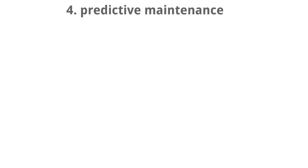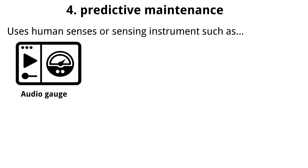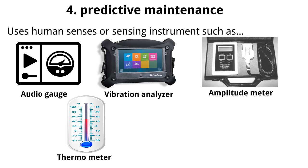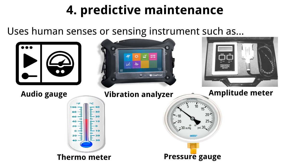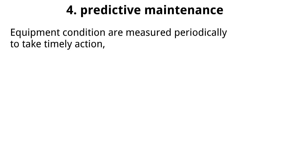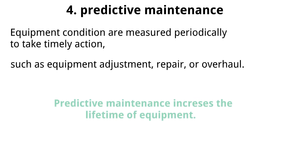4. Predictive maintenance. It is a newer maintenance technique that uses human senses or sensing instruments such as audio gauges to sense machine sound, vibration analyzers for checking vibration, amplitude meters, thermometers, pressure gauges, etc., to predict trouble before breakdown occurs. In predictive maintenance, equipment conditions are measured periodically to take timely actions such as equipment adjustment, repair, or overhaul. Predictive maintenance increases the lifetime of the equipment.